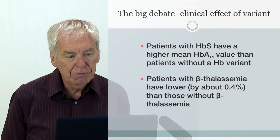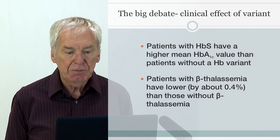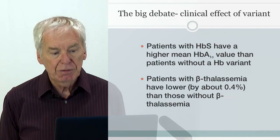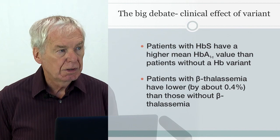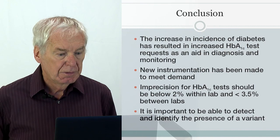The clinical effect of variants is substantial. Patients with hemoglobin S have a higher mean A1c than patients without — which is very important when using fixed thresholds for both diagnosis and monitoring. Patients with beta-thalassemia have lower A1c than those without, and again this becomes important when using a single fixed threshold.